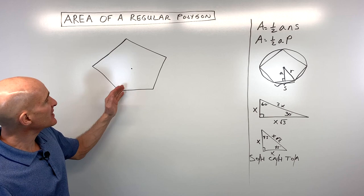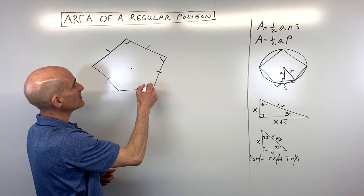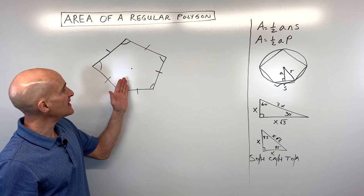Say we're given a regular polygon like this. A regular polygon means that all the sides are the same length — they're congruent — and all the angles are going to have the same angle measure. What we want to do is take this basic figure and divide it up into triangles.